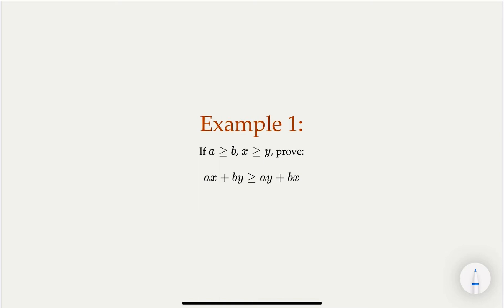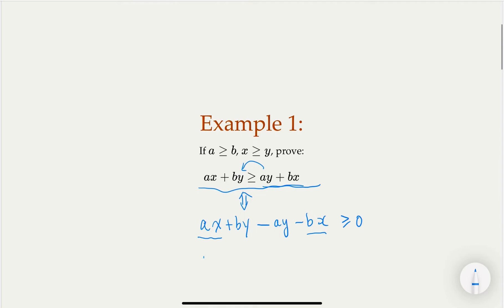In order to prove this, we want to equivalently show that ax + by − ay − bx ≥ 0. When you think about these terms, you probably want to combine like terms. You have x with coefficient a − b, so you get (a − b)x. And for y, you combine to get (b − a)y. So we want to prove (a − b)x + (b − a)y ≥ 0. This is equivalent because a − b and b − a share a common factor with a negative sign.